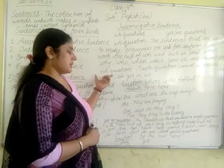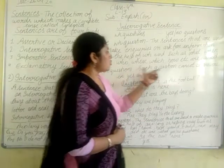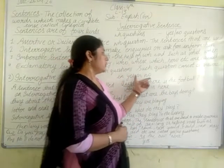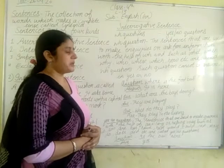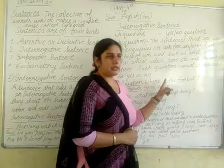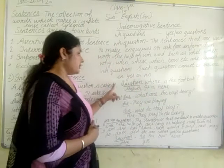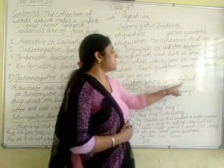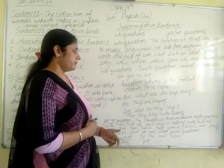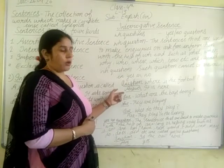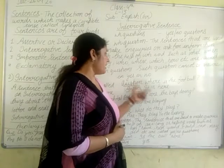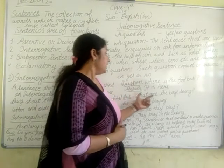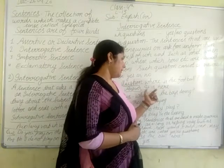For example: 'What are you doing?' — this starts with a WH word. Such questions cannot be answered in yes or no. For example: 'Where is that football?' — the answer would be 'It is here,' not simply yes or no. That is because these are WH questions; they require a specific answer, not yes or no.